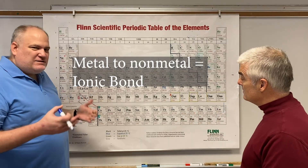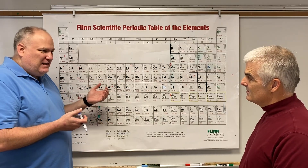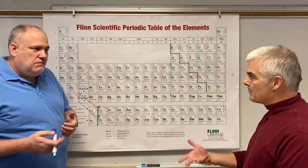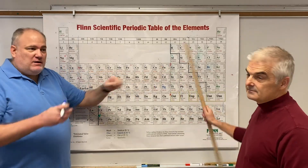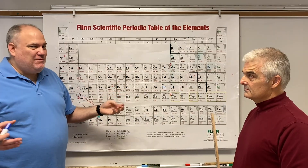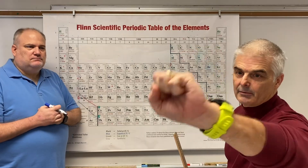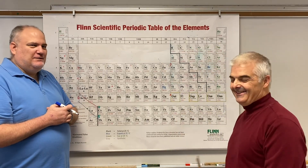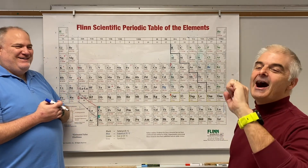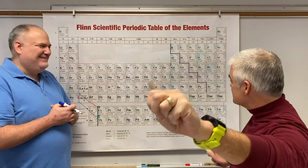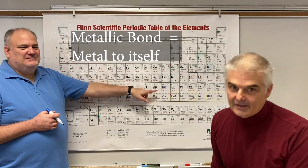Metallic bonding is weird because it's a bond where a metal bonds with more of its own kind — like copper with copper. If I have a piece of copper metal, that really is trillions and trillions of copper atoms. Like my gold ring here — this is the element Au, gold connected to gold connected to gold.